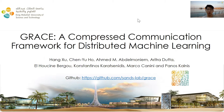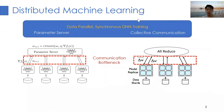I will start with a quick introduction of the background and also the motivation of this work. In distributed machine learning, typically data parallel synchronized training, there is frequent and heavy communication between the training nodes, either in the parameter server mode or peer-to-peer collective mode. The problem is, once the model parameters get larger and larger, the communication becomes a bottleneck and therefore slows down the whole training process.